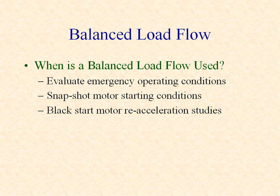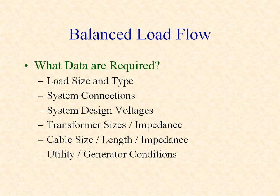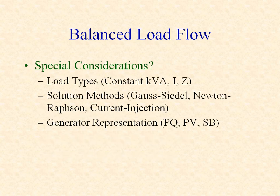The DAPR balanced load flow study assumes a three-phase power system with balanced three-phase loads. A load flow study requires load size and characteristics, system connections, design voltages, transformer sizes and impedance, cable sizes, length, and impedance, and utility and generator conditions. Loads are typically represented as either constant kVA, where the power remains constant and the current varies with voltage; constant current, where the current remains constant and the power varies with voltage; or constant impedance, where the current and power vary with voltage.